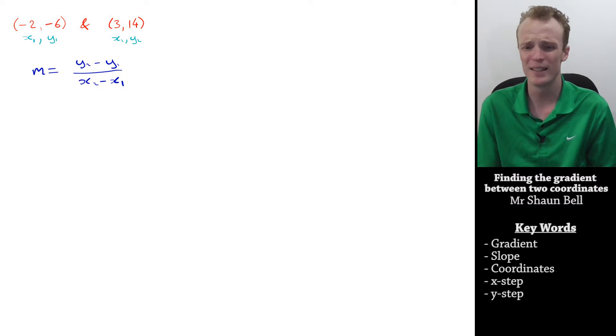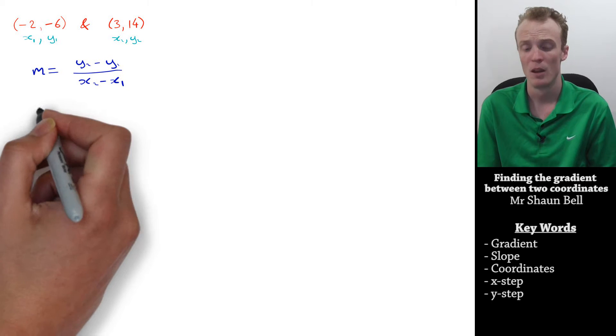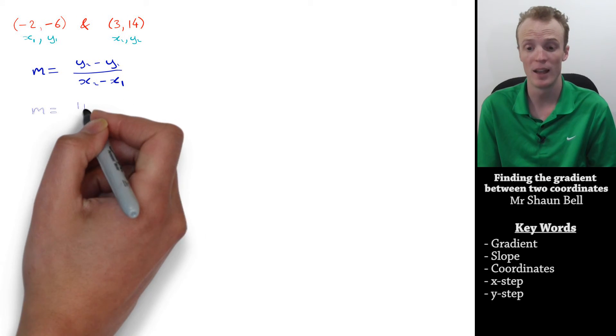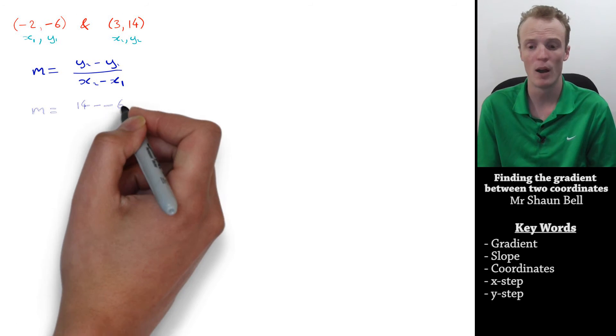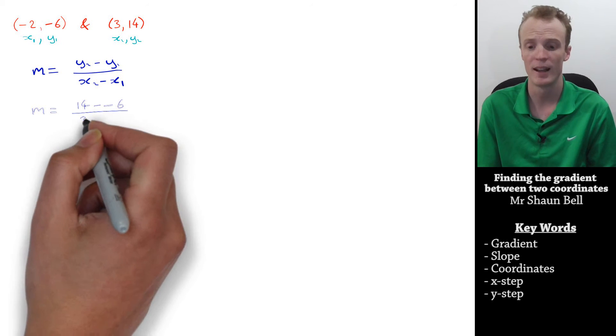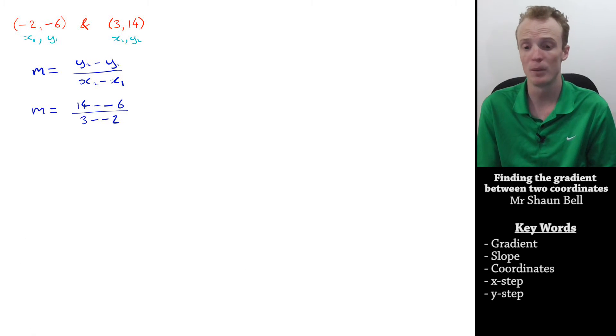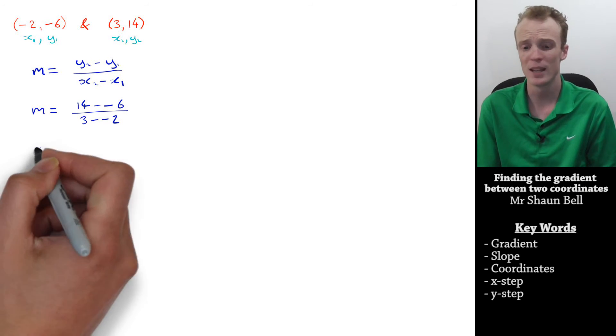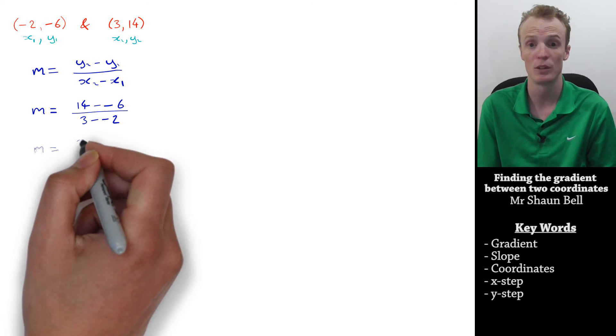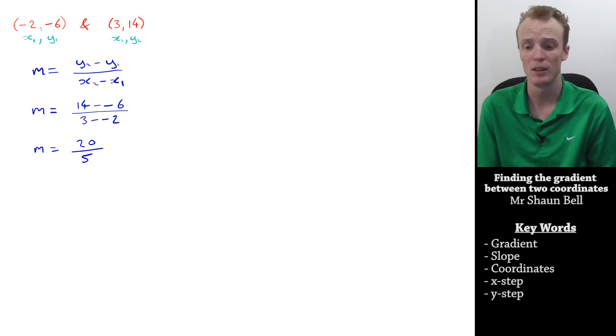We now replace our y2 value with 14, as we labelled, and subtract our y1 value, which is negative 6. We also replace our x2 with 3, and subtract our x1 value of negative 2. 14 subtract negative 6 is equal to 20, and 3 subtract negative 2 is equal to 5. So, our gradient is equal to the fraction 20 over 5.